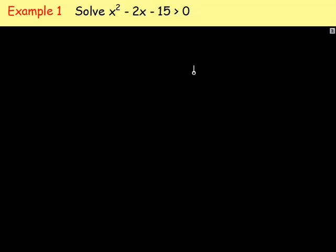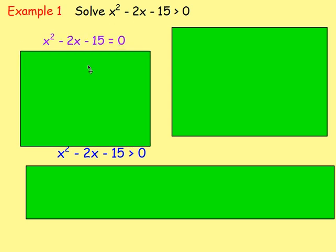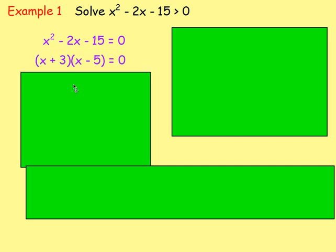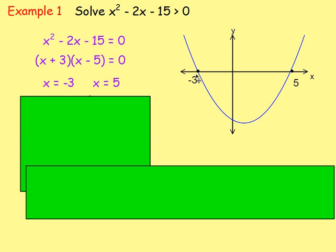Example number one: Solve x squared minus 2x minus 15 is bigger than zero. First of all, set it equal to zero — x squared minus 2x minus 15 equals zero. Factorising gives (x + 3)(x - 5), so x is negative 3 and x is equal to 5. Make sure you're just going off to the side and setting it equal to zero when you factorise. Now would the sketch be a smiley face or a sad face? Smiley — yes, because the x squared coefficient is positive. So the graph goes through negative 3 and 5 and looks like a U-shape.